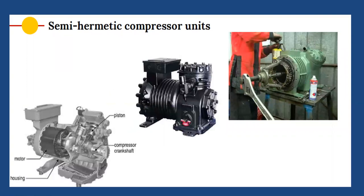Semi-hermetic compressors can be dismantled for maintenance work — this is a key feature. In hermetically sealed compressors, both compressor and motor are sealed in one unit with welded shells, making these compressors generally not repairable. If a problem arises, the compressor must be replaced. Repair is not recommended because there is a possibility of dust contamination and the oil levels are disturbed, preventing proper operation after repair.